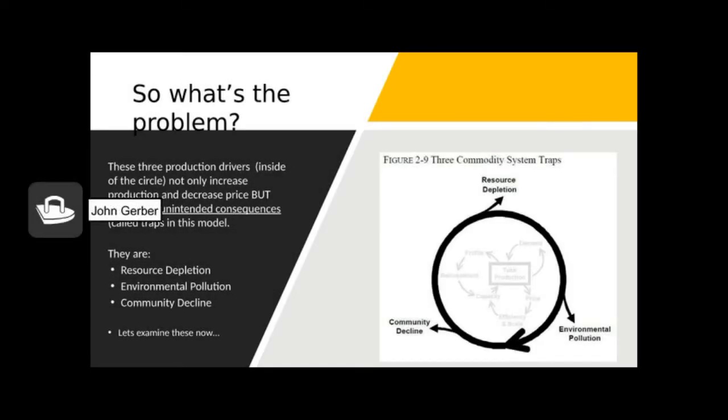Inside the circle you'll see an abbreviated form of the structure of the commodity system, the increased demand, increase in profits, and increase in efficiency and scale. Outside of the circle you see what we're calling three unintended consequences or traps. These three commodity traps are the resource depletion trap, the environmental pollution trap, and the community decline trap. There's one more which we'll learn about later.